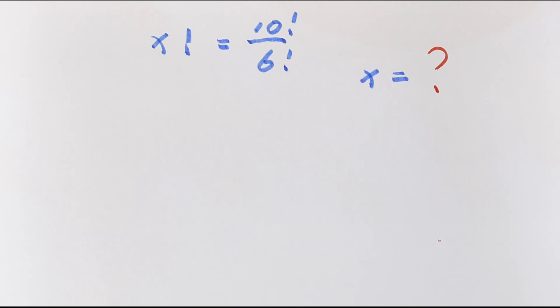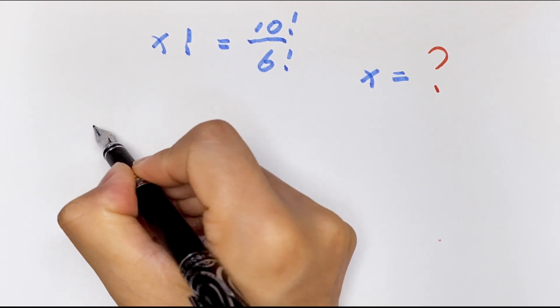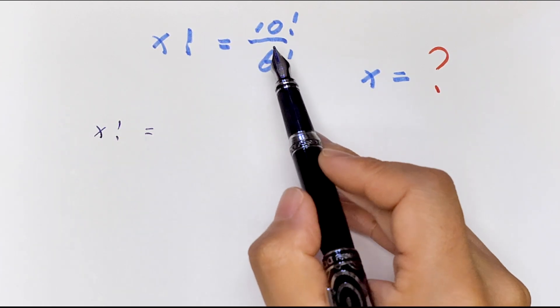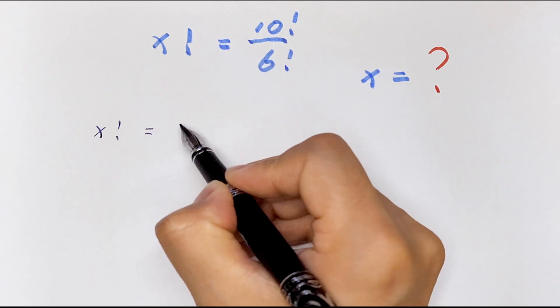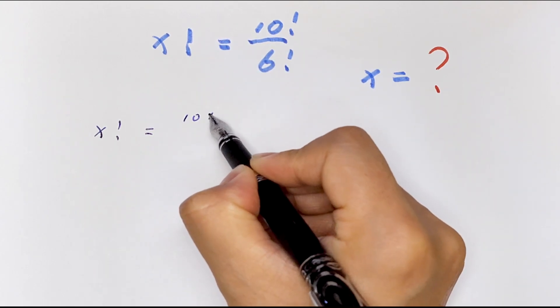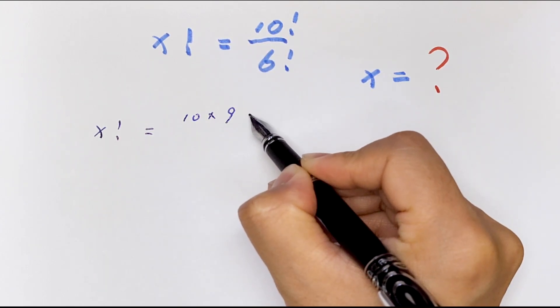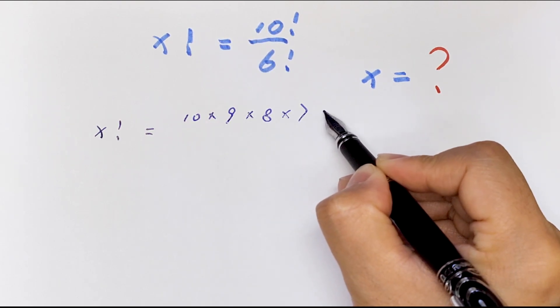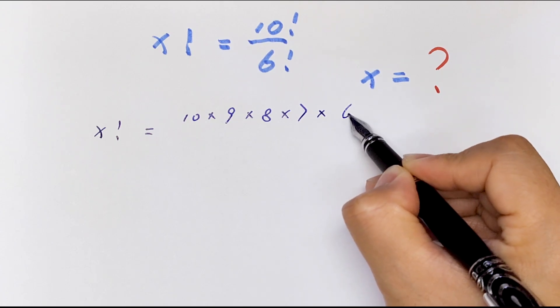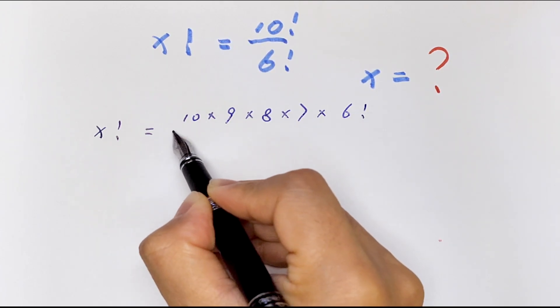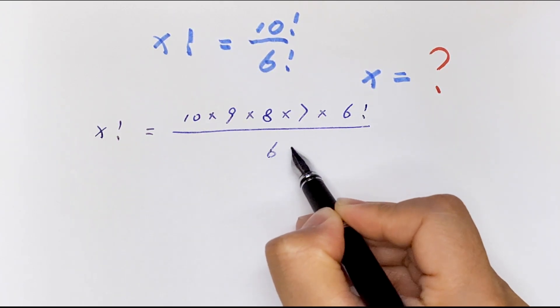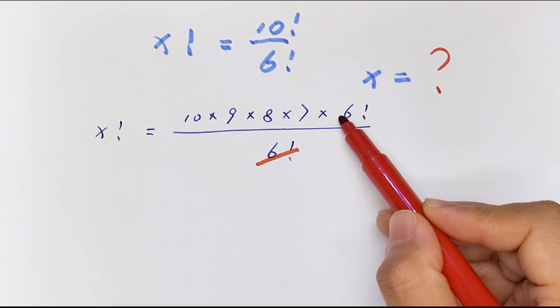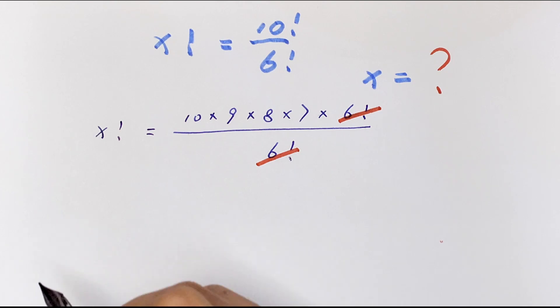So first, the step: x factorial is equal to 10 factorial, which is the same as 10 times 9 times 8 times 7 times 6 factorial over 6 factorial. In here, 6 factorial will cancel.